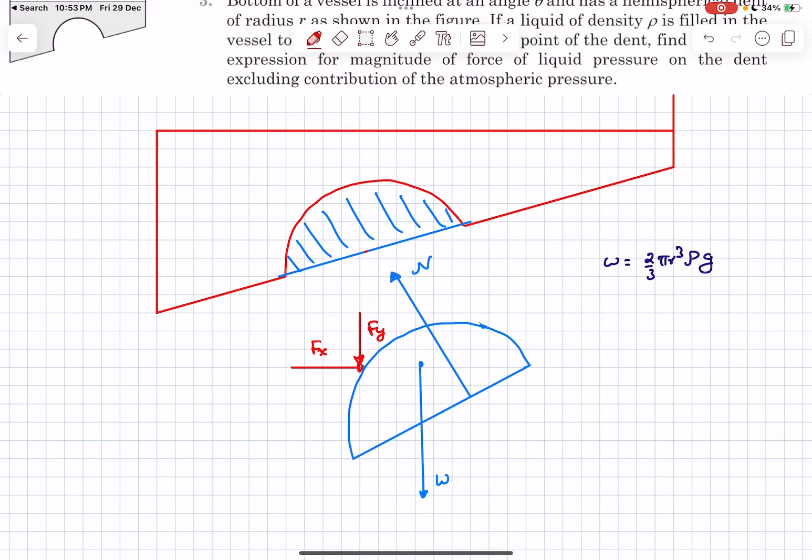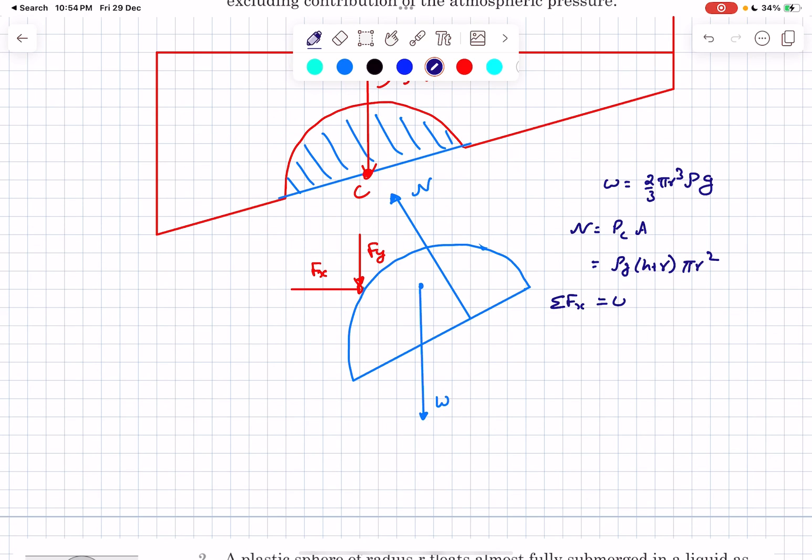The centroid of this base circle is simply the center of curvature of this hemisphere; let's call that point C. C is at a distance of r + h from the free surface. So if you want to write N in one step, it is the pressure at C multiplied by the area of cross-section. The pressure at C is ρg times (h + r); area of cross-section is π r².